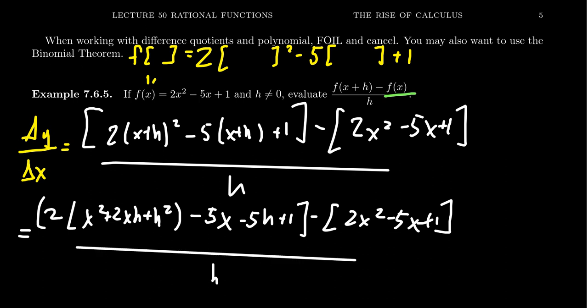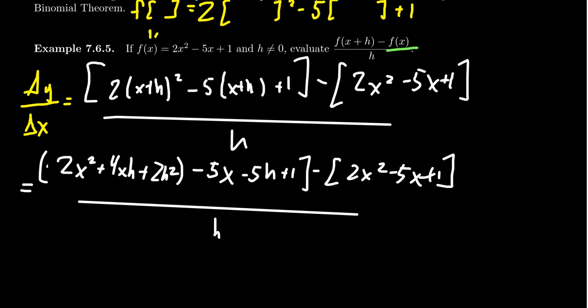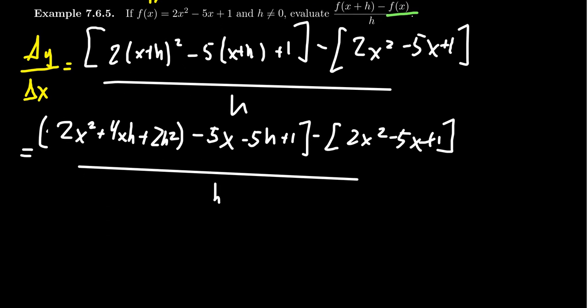Distribute the negative 5, you're going to get -5x - 5h + 1 - 2x² + 5x - 1. This is all sitting above h. I'm also going to distribute this 2 throughout here. We end up with 2x² plus 4xh plus 2h². You don't necessarily have to do that all at once. Don't do too much that you can handle. But now we're ready to combine some like terms.